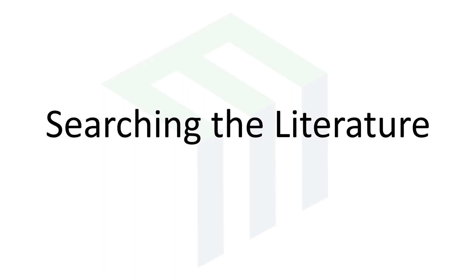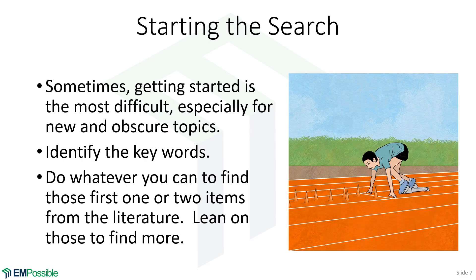Searching the literature. The start of your literature search is tough and daunting. The goal here is to become somewhat of a subject matter expert — meaning you have an awareness for the topics, who are the key players, and what's new, because you've read a lot about it. It doesn't necessarily mean you've worked in it. This is especially hard for new and obscure topics where you're thinking, what are even the keywords to search for? And that's really the first step: identify keywords for your search.